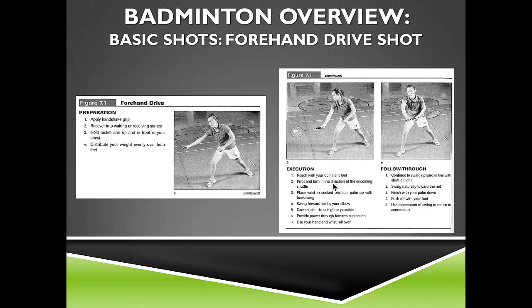The forehand drive is a stroke hit from the side of the body with the birdie contacted at approximately waist height. It's a forceful shot that travels in a straight plane over the net with little arc. Use a handshake grip, stepping same-side foot toward the birdie with the racket in front of the chest. Pivot and turn toward the shuttle, rolling the wrist over on contact. Power comes from supination of the forearm. Finish with palm down as the key cue. Follow through across the body naturally toward the net, then return to center court.